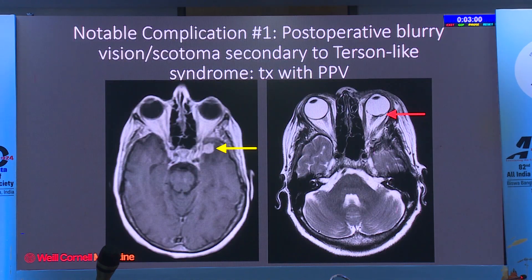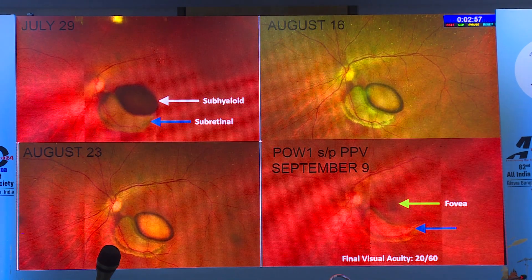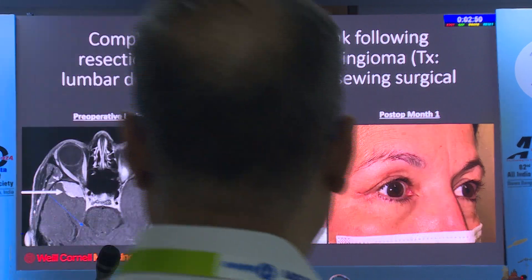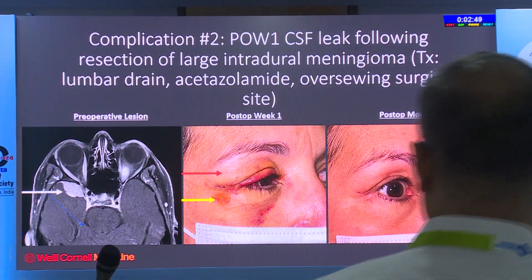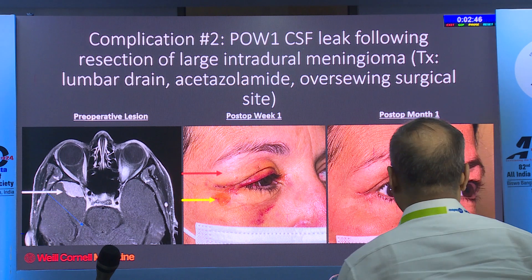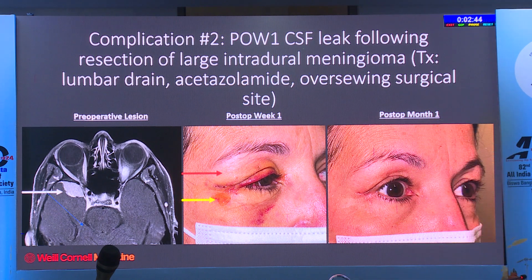The Terson syndrome case arose from an intradural meningioma, probably from retraction morbidity on the optic nerve and venous outflow congestion. We had one CSF leak treated with packing, over-sewing the wound, and a lumbar drain. Since switching from PDS sheet reconstruction to abdominal fat graft, we have not had a CSF leak since.